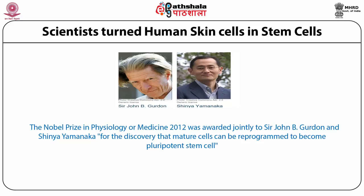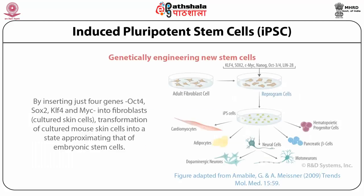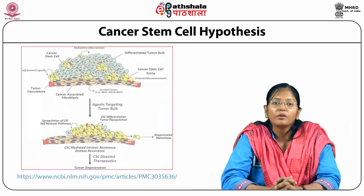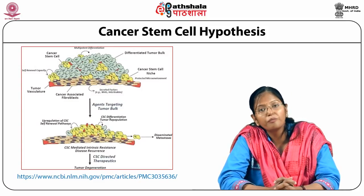A breakthrough in the field of stem cells occurred in 2012, where two scientists — John Gurdon and Shinya Yamanaka — received the Nobel Prize in Physiology or Medicine for the discovery that mature cells can be reprogrammed from skin cells into pluripotent stem cells. These are known as induced pluripotent stem cells (iPSCs). Yamanaka genetically modified skin fibroblast cells by introducing transcription factors OCT4, SOX2, KLF4, and c-Myc, reprogramming them into a state approximately similar to embryonic stem cells — meaning a mature cell can be reprogrammed into a stem cell and then into different cell types needed by the body.